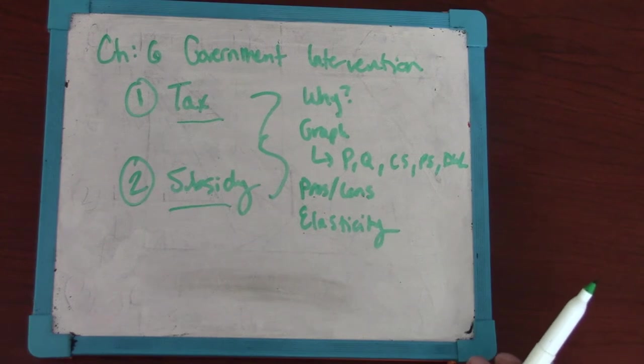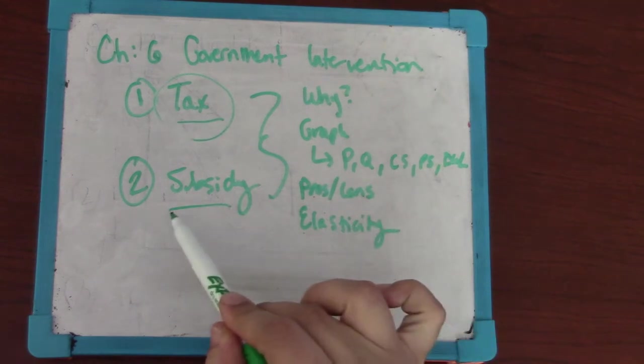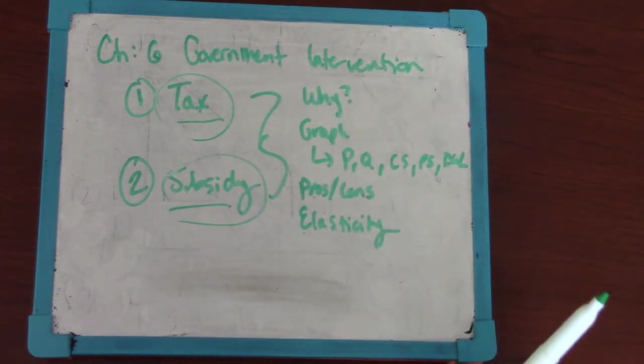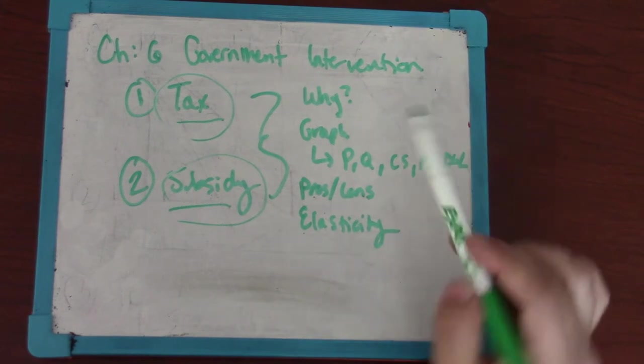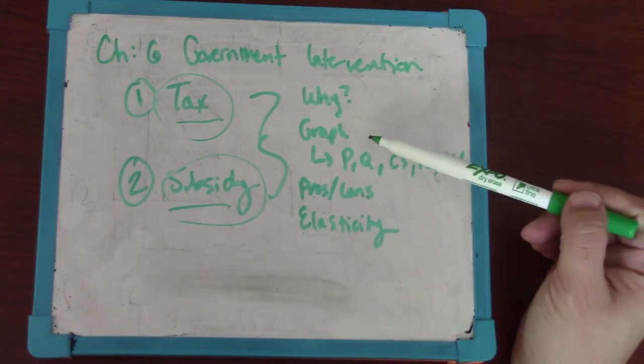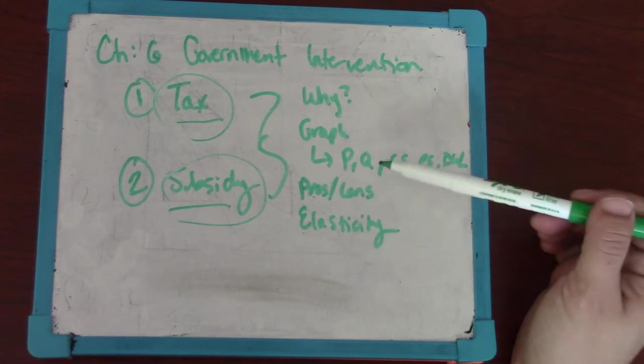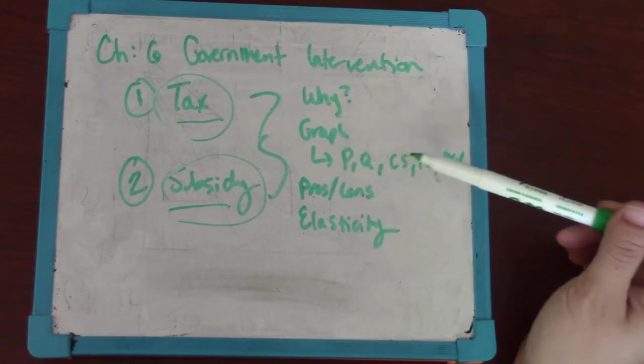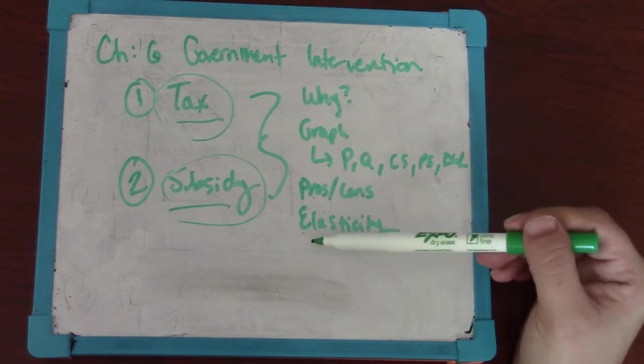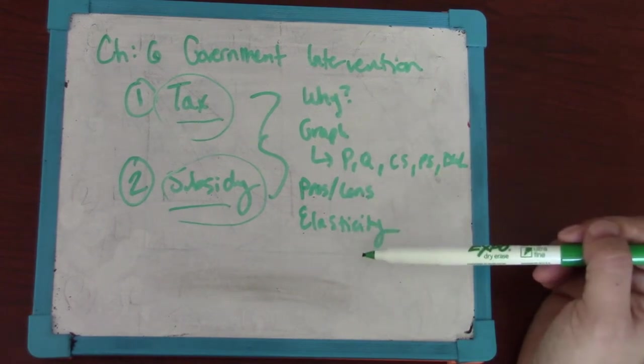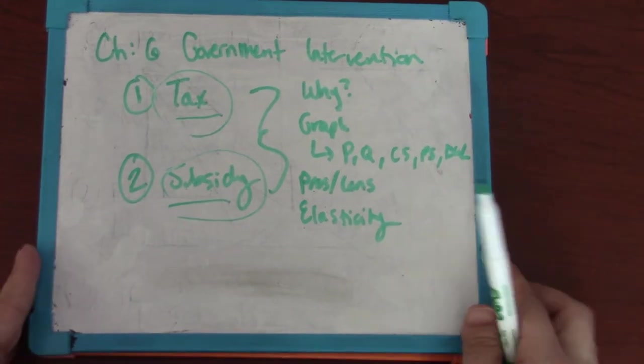The thing that both of these policies have in common is they're both per unit charges or payments that are going to shift our demand and supply curves. We learned way back in Chapter 3 that one of the six things that can shift demand and supply are a tax or a subsidy. We'll talk about in this video why these policies might be implemented, how to graph and analyze their impact on price, quantity, consumer surplus, producer surplus, deadweight loss, what some of the pros and cons are of this policy, and then what does elasticity have to do with their impact.